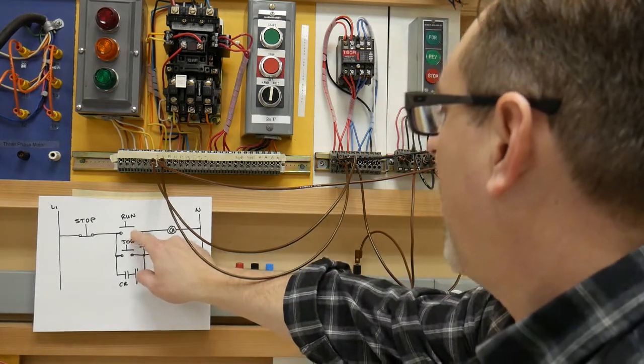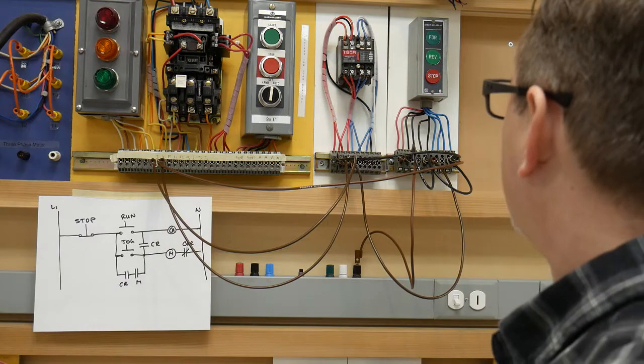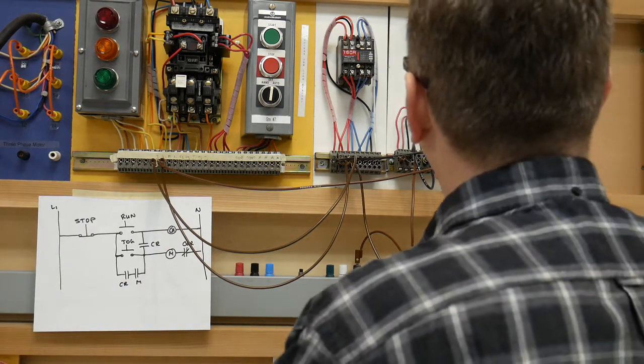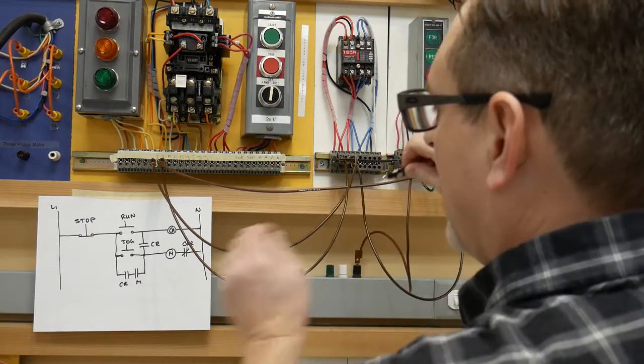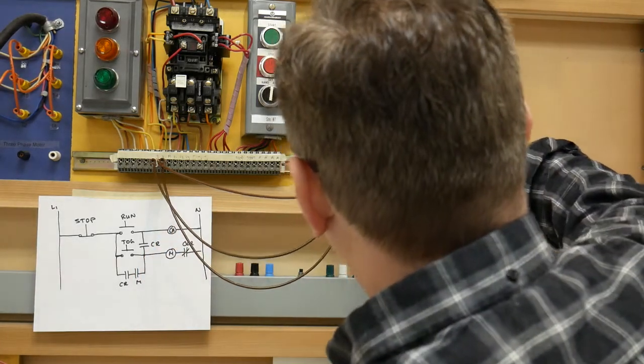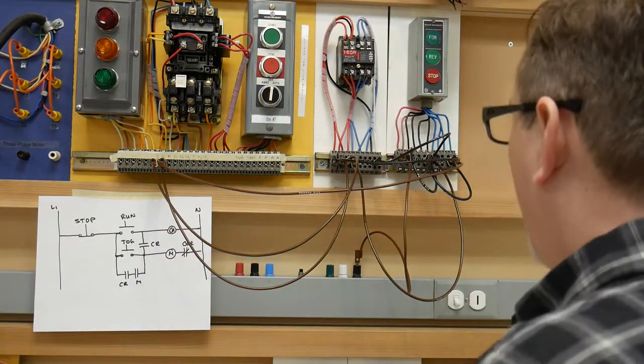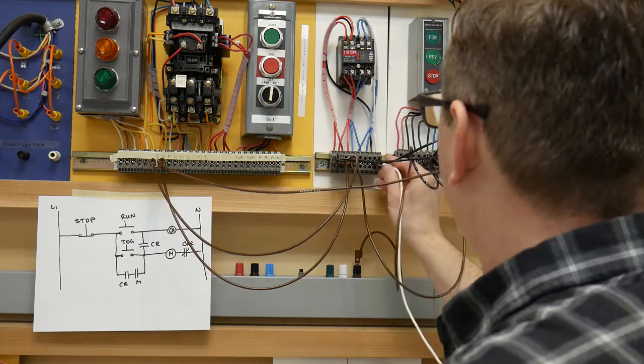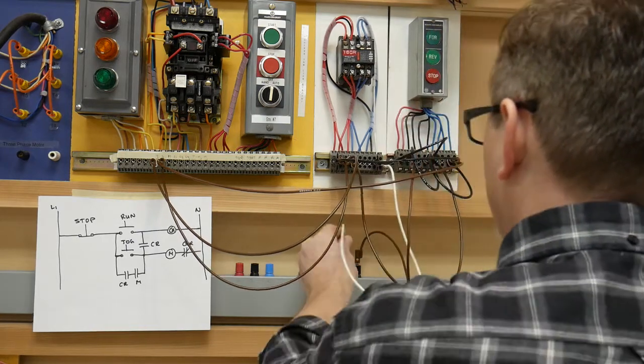Now out of that run push button, that same side, which was here, we need to feed our coil. That's the line one. And then we're going to come out of that coil to our neutral.